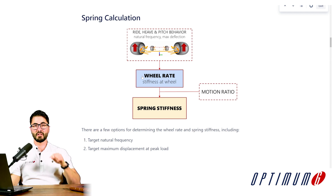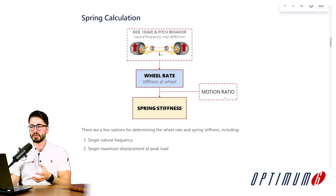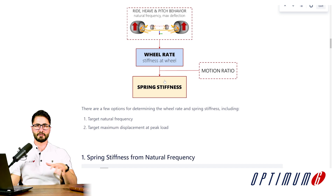The wheel rate is basically the stiffness as seen on the suspension as you compress and extend it, instead of looking directly at the damper. Once you have the wheel rate calculated, if we use the motion ratio that we found in the previous episodes, you can convert that into spring stiffness.